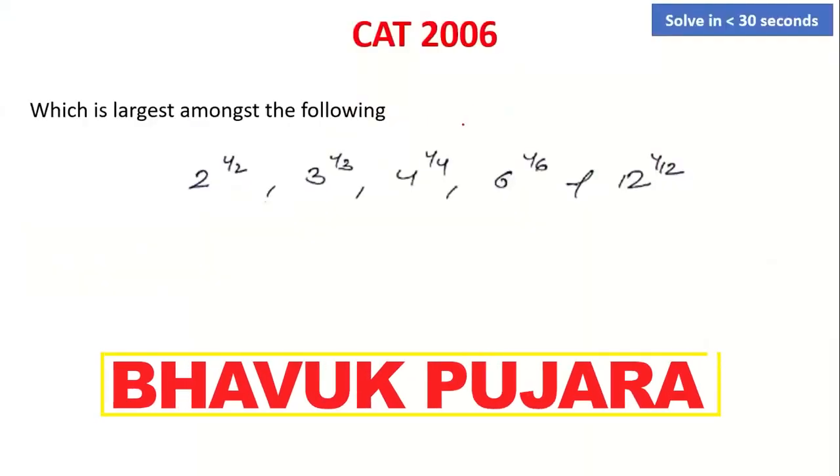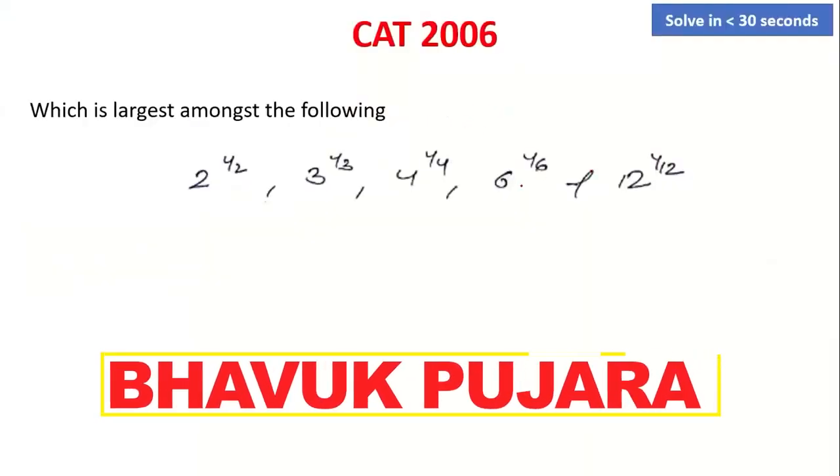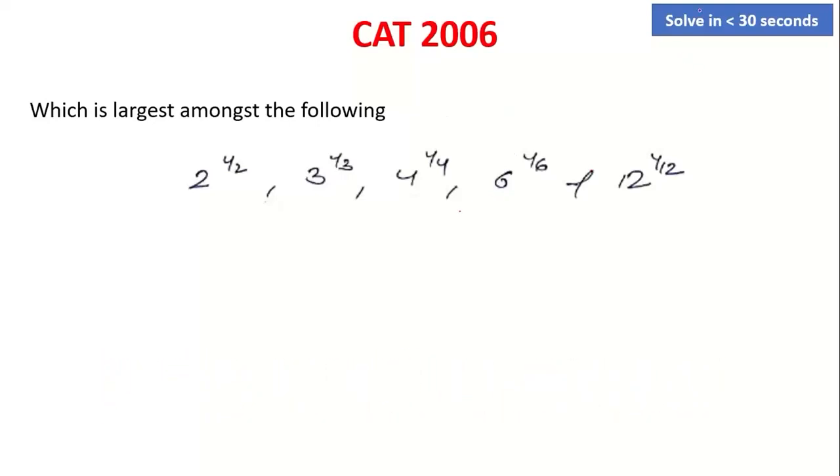Now let's look at CAT 2006's question on HCF LCM. Let's read this question and check this out. What do you write in the top right? Solve in less than 30 seconds. CAT 2006's question should have been solved in less than 30 seconds. Which is largest amongst the following? 2 raised to power 1/2, 3 raised to power 1/3, 4 raised to power 1/4, 6 raised to power 1/6, or 12 raised to power 1/12.